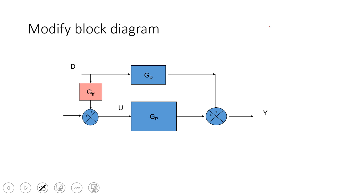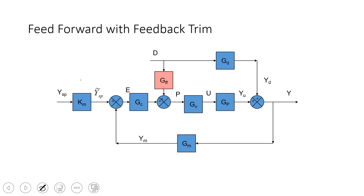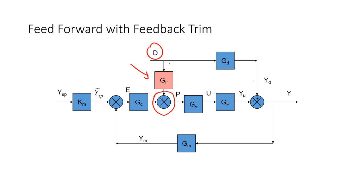Here is the modified block diagram with the feedforward controller included, shown with feedback trim. The feedforward controller fits into the overall scheme by measuring the disturbance and proactively changing the controller output to reject it — sending a counteracting signal so the process stays on setpoint.